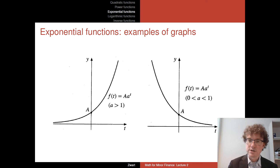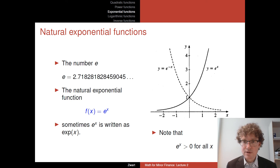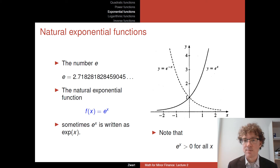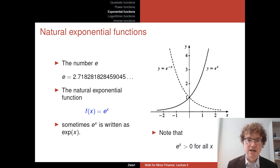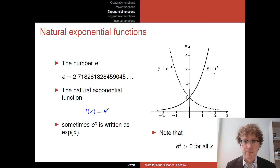Those are exponential functions; we'll look at their characteristics more closely when we study differentiation. Before that, there's one important thing: among all possible bases a — greater than one for growth, less than one for decline — a special value is the number e, which you'll find on your calculator. Its value is 2.718281828459045, with many more digits after.